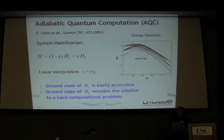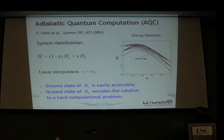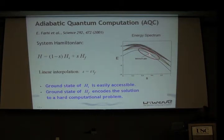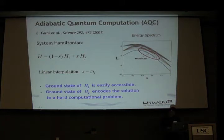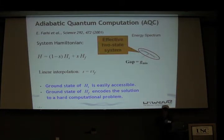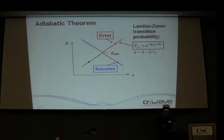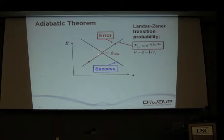The dangerous point in adiabatic quantum computation is where the gap between the first two states is small. If at this point a transition from the ground state to the first excited state can happen, and if the energy separation between these two states and the upper states is large enough, you can focus on these two energy levels as an effective two-state system. The problem then becomes the Landau-Zener problem, and the probability of transition from the ground state to the excited state is given by the Landau-Zener probability, which is exponentially dependent on the gap.